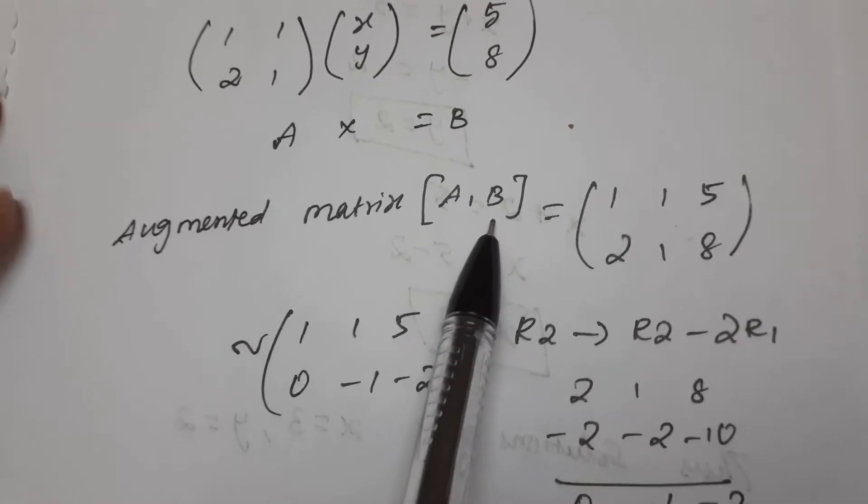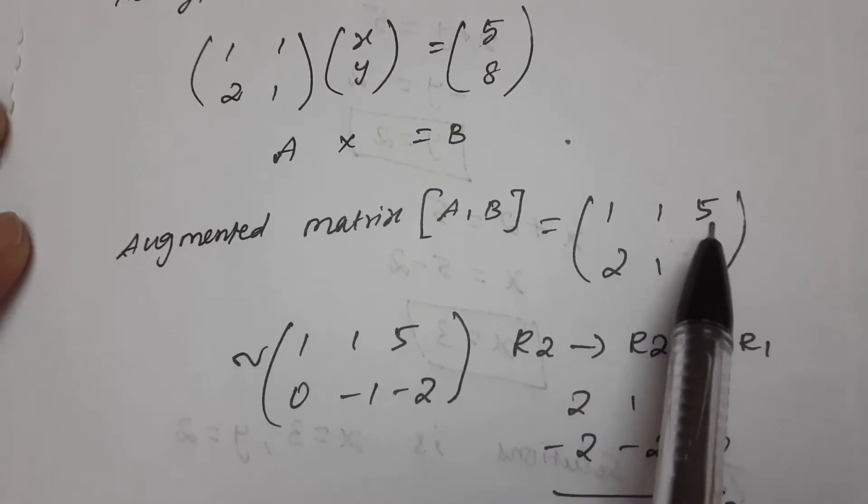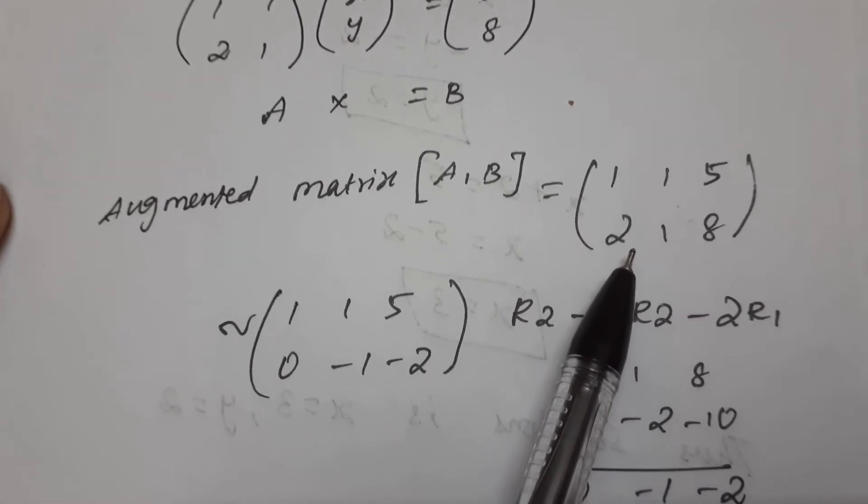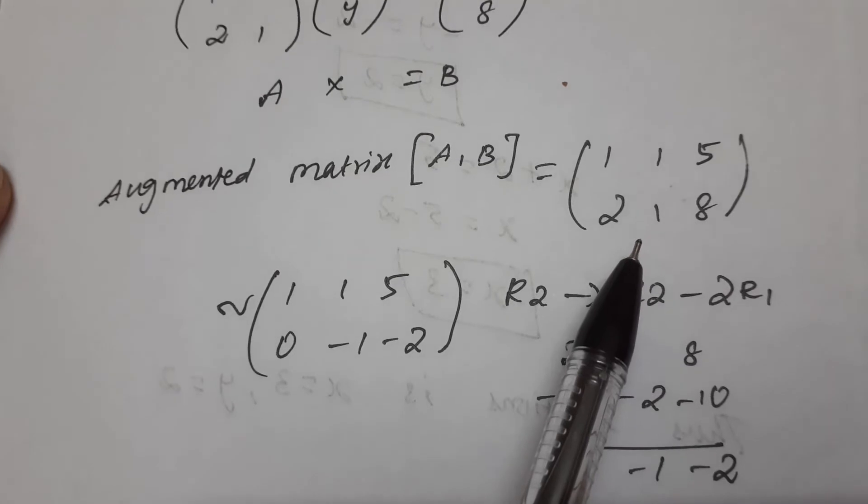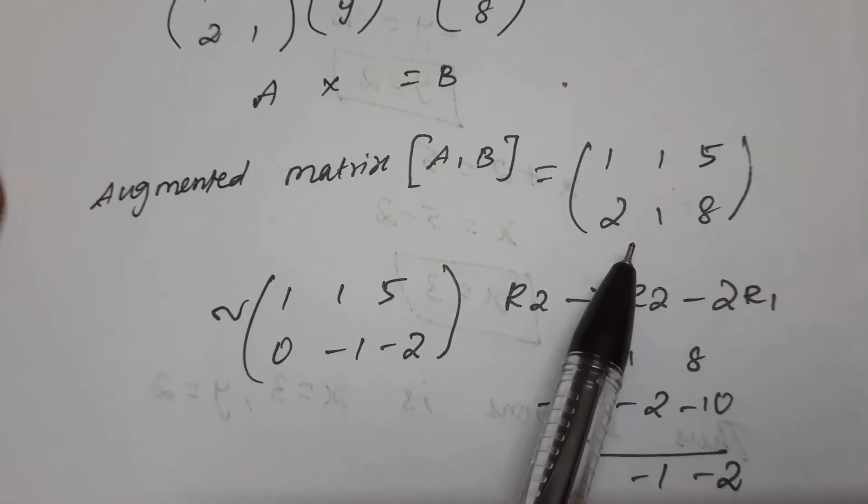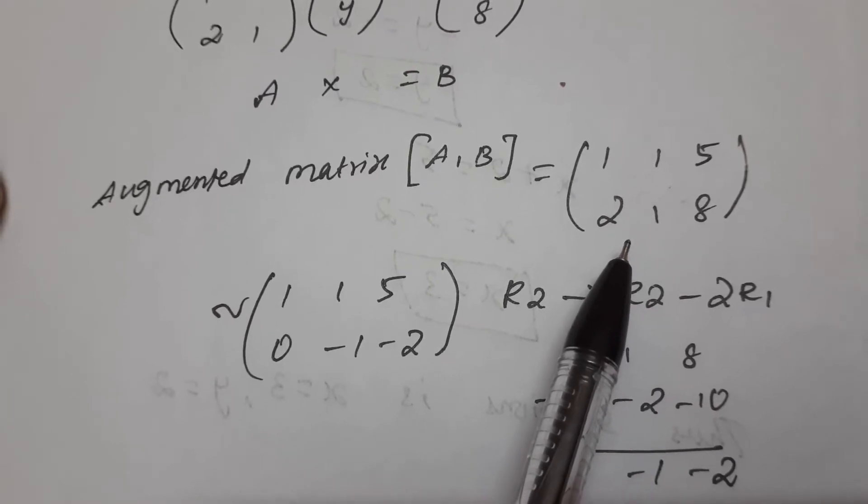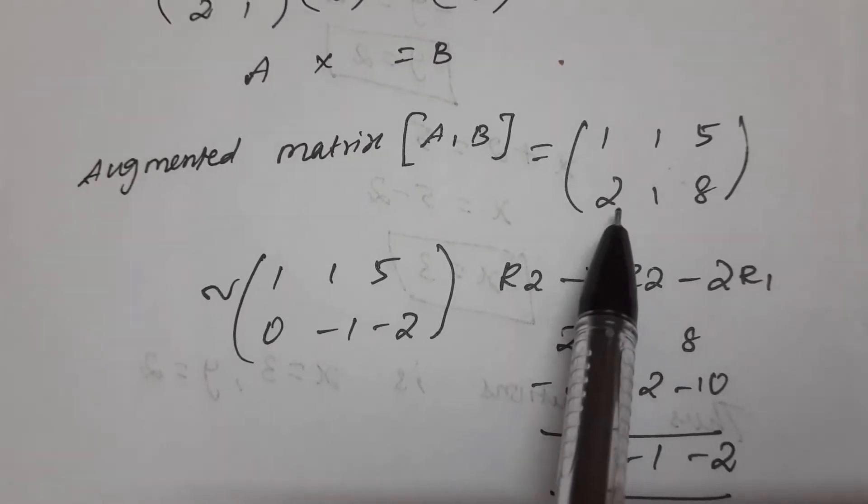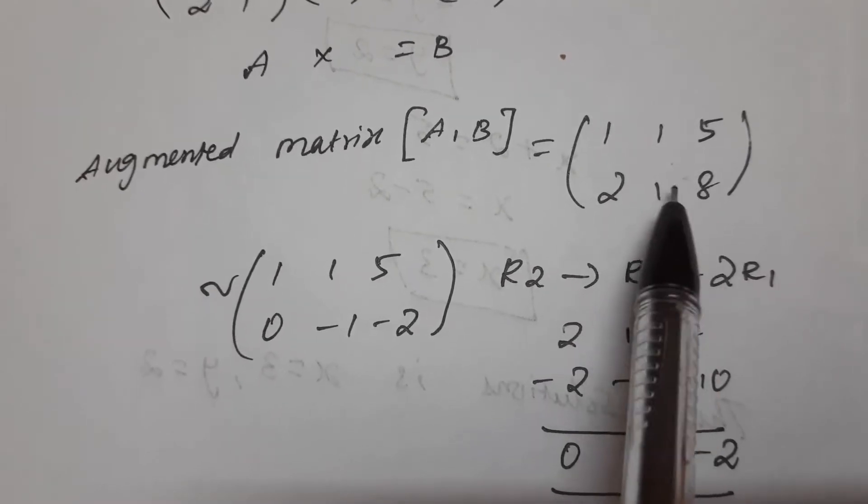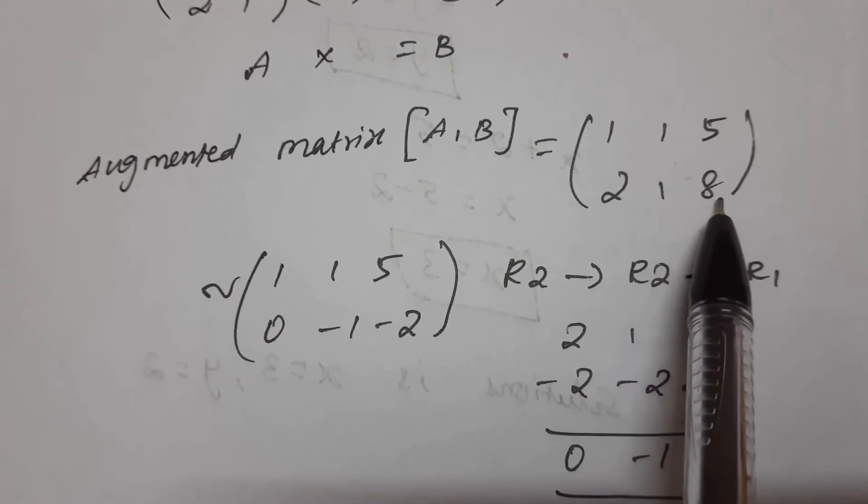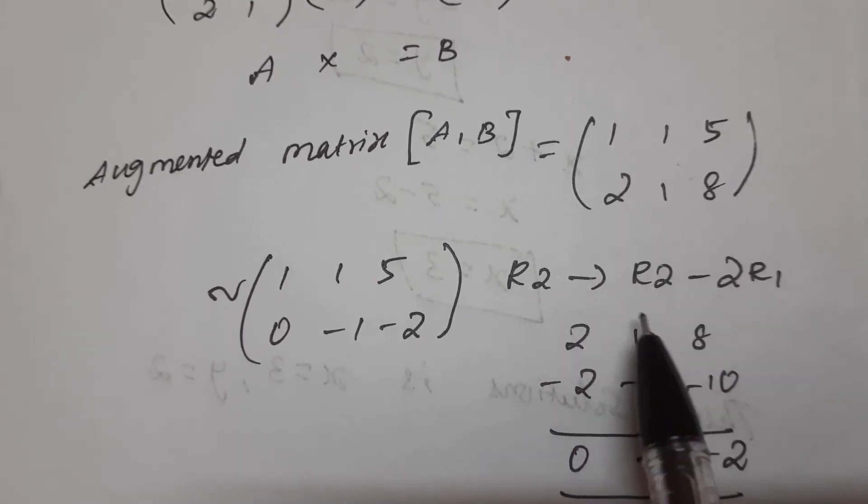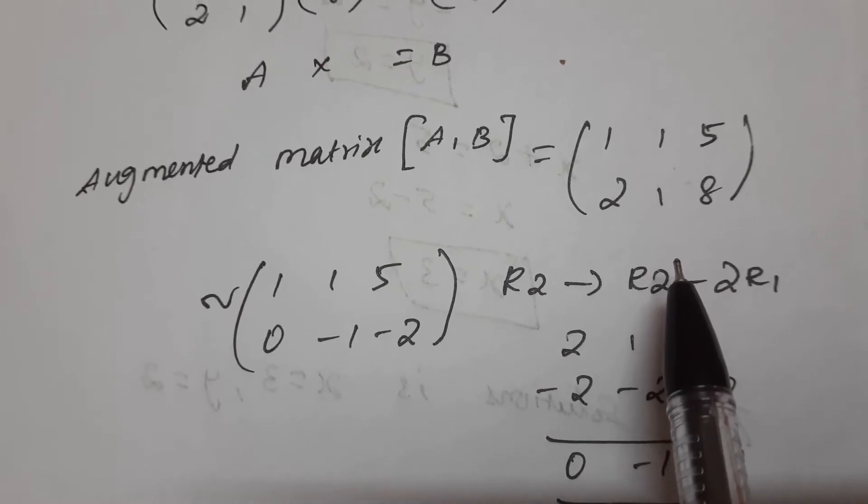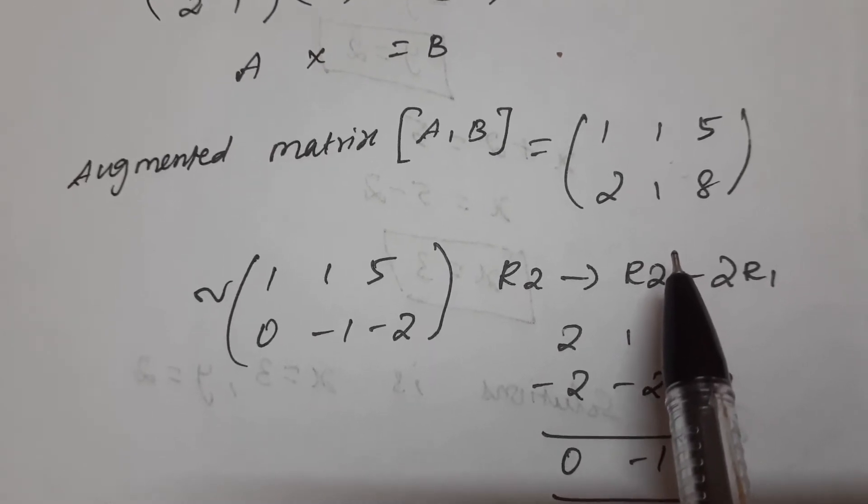So the augmented matrix [A,B] equals (1 1 5; 2 1 8). For this we need to find rank. We know for consistency, rank of A equals rank of AB. If rank A equals rank AB, the system is consistent. Let's find rank. We have 2 rows and 3 columns, so this is 2x3.